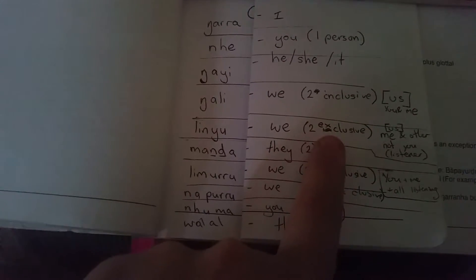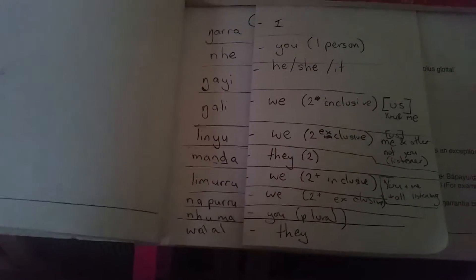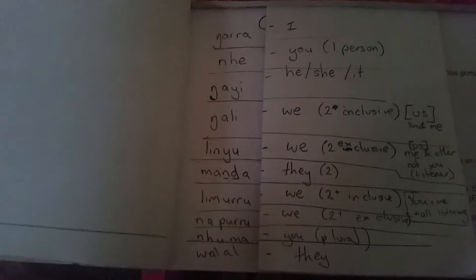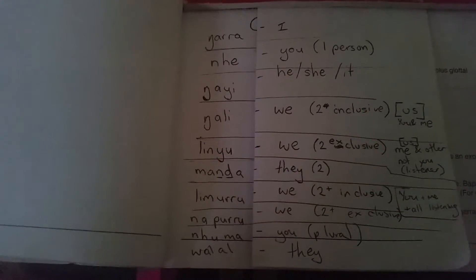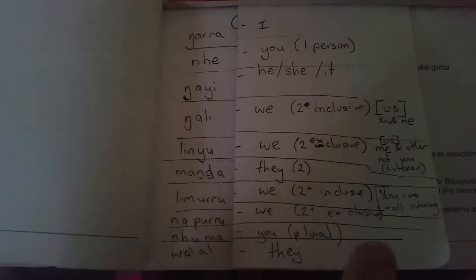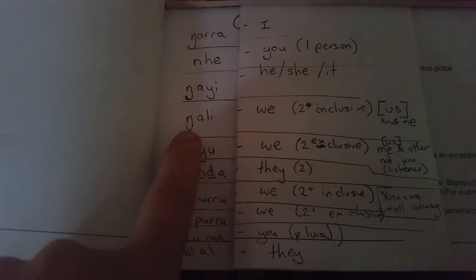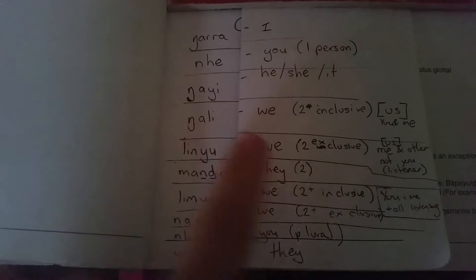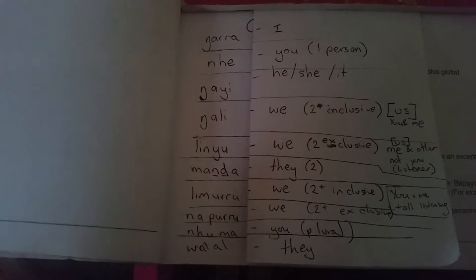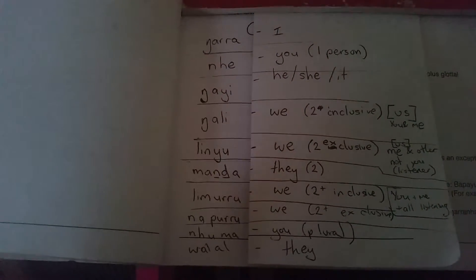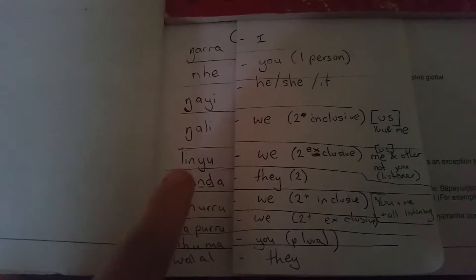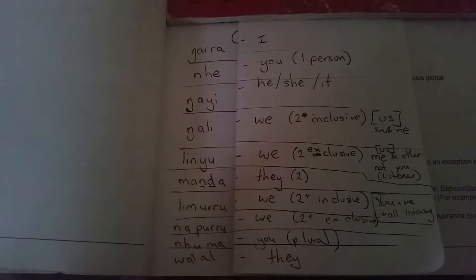Inclusive and exclusive refers to whether or not you're including the person who's listening to what you're saying. So when we say 'Nali', that means you and me — just the two people talking — that we're going to go do something. If you say 'Linyo', then that means you and one other person but not the person you're talking to.